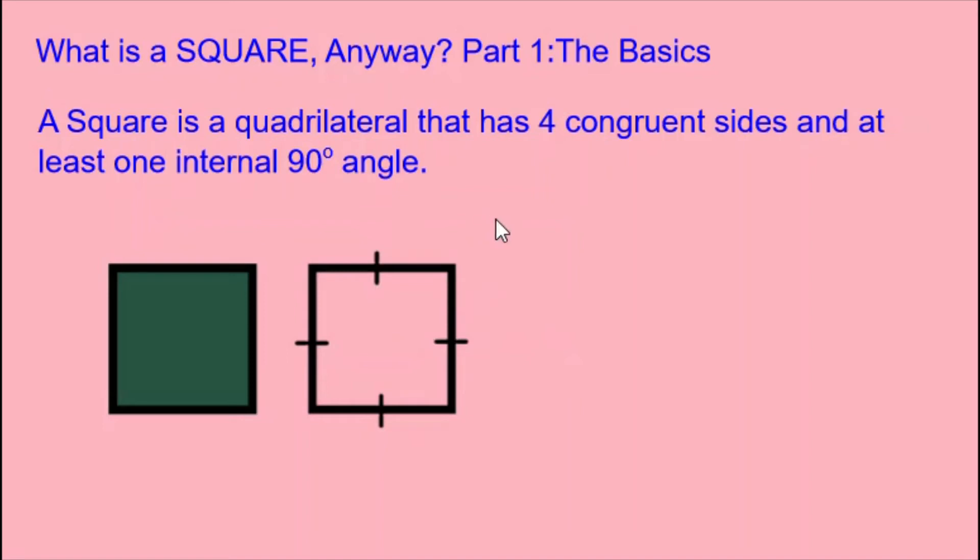And at least one internal 90-degree angle. Well, that's interesting because most of us realize that a square actually has four internal 90-degree angles. So why does the definition only talk about at least one?